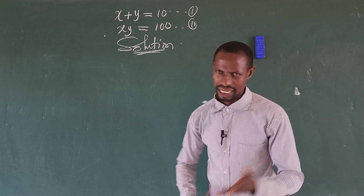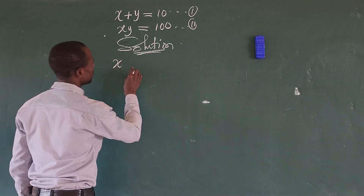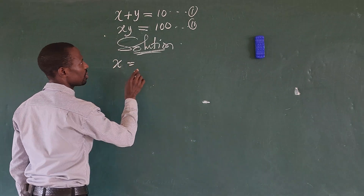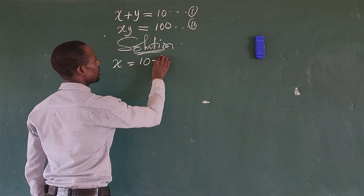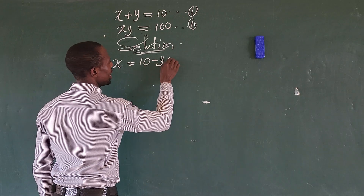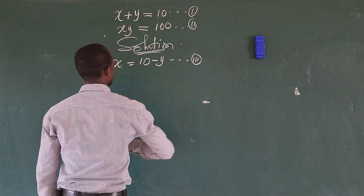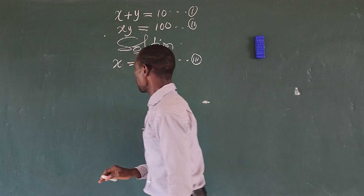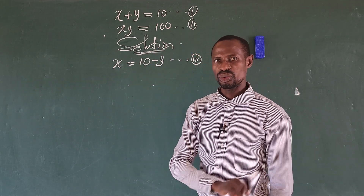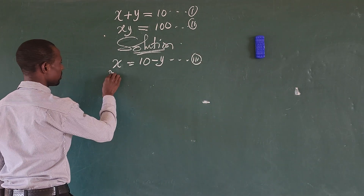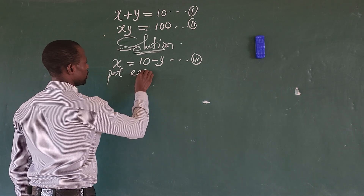Making x the subject of the formula gives us x equals 10 minus y. Let's call this equation three. Now we want to put equation three into equation two.